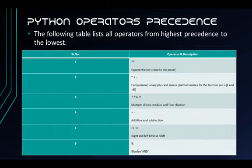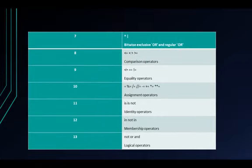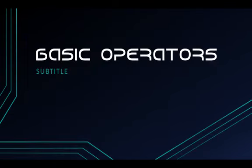Lastly, we cover the precedence of Python operators. We will show a list of all operators from highest precedence to lowest. This means that the operator with the highest precedence will be the first to operate in your code expression. This concludes the basic operators for the Python language.